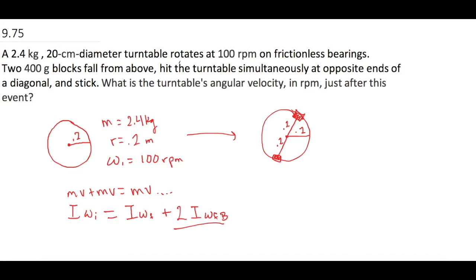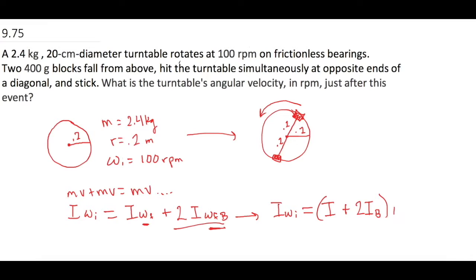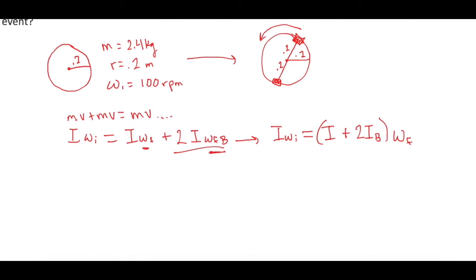Since the blocks are sticking to the turntable, they will have the exact same angular velocity as the turntable. So we can treat omega final for the turntable and omega final for the blocks as the same value. That gives us: I·omega initial for the turntable equals I for the turntable plus 2I for the blocks, all times omega final.